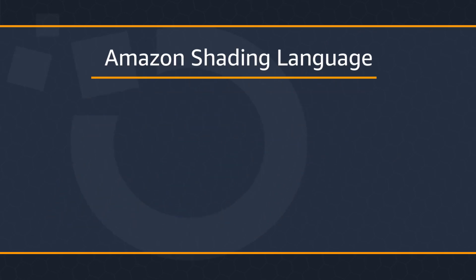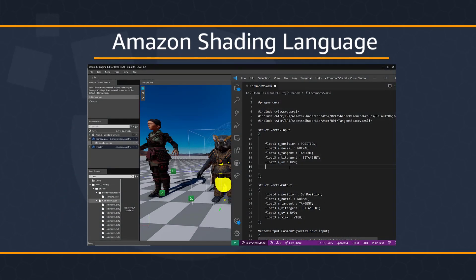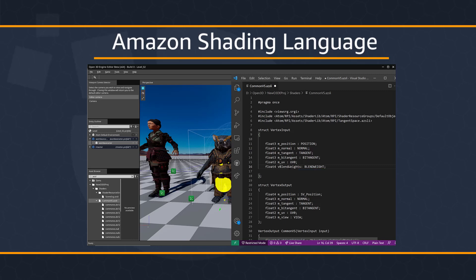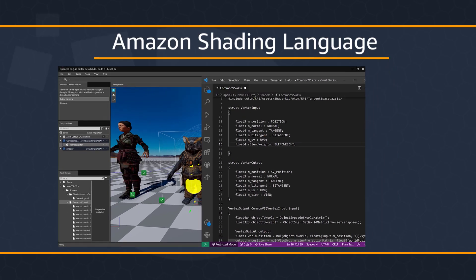Let's take a look at the Amazon Shading Language, or AZSL. AZSL is an extension of Microsoft's DirectX 12's HLSL language, with some extra tweaks to support Atom's inherent flexibility. We know you prefer the familiar in your day-to-day work, and we saw no need to dramatically reinvent shading language grammars. Here are a couple of key benefits that AZSL brings.